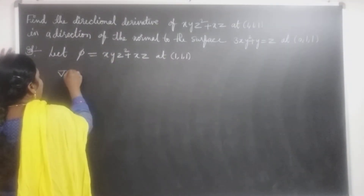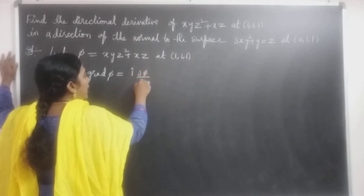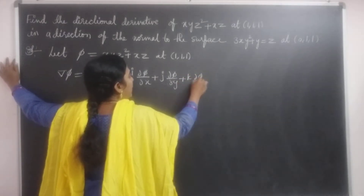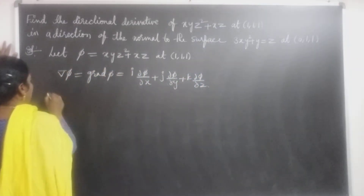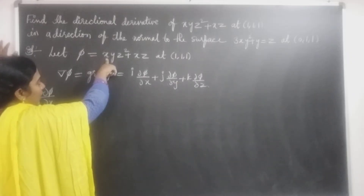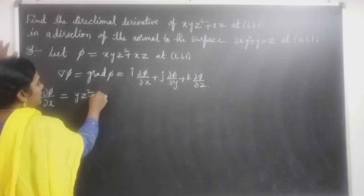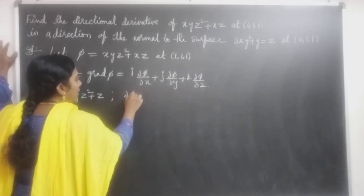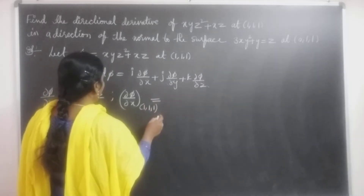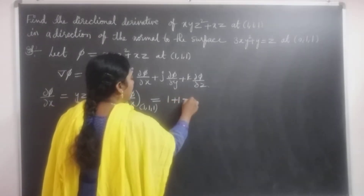Find ∇φ = grad φ = i(∂φ/∂x) + j(∂φ/∂y) + k(∂φ/∂z). First, find ∂φ/∂x: treating y and z as constants, x is the variable, so ∂φ/∂x = yz² + z. At the point (1, 1, 1): y = 1, z = 1, so it equals 1·1² + 1 = 2.